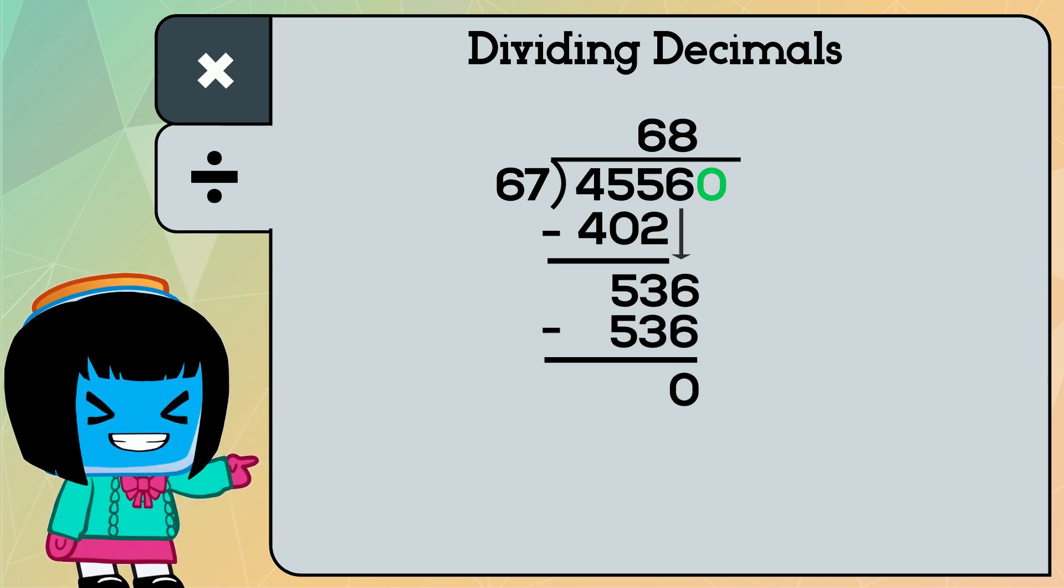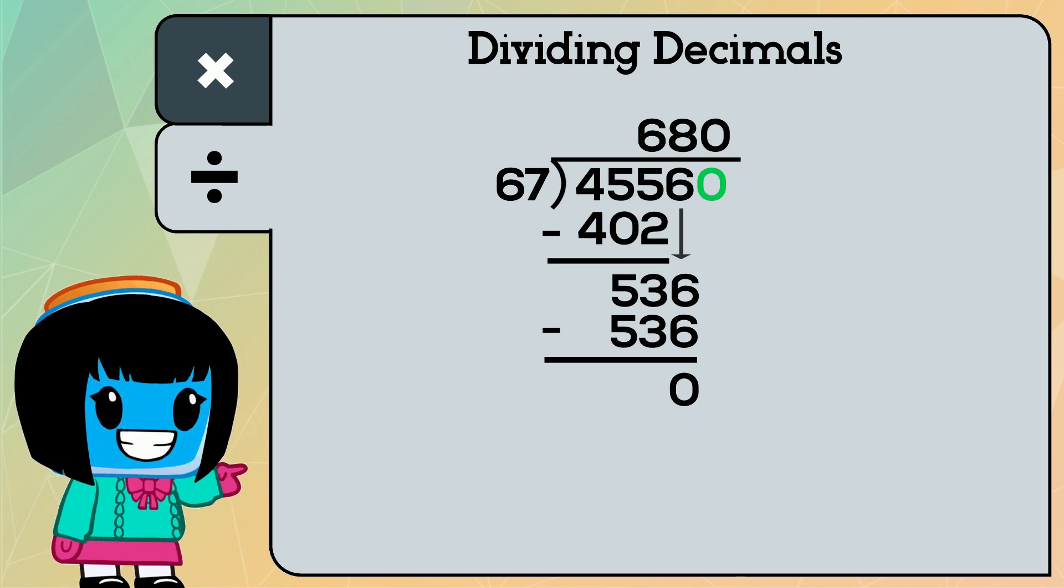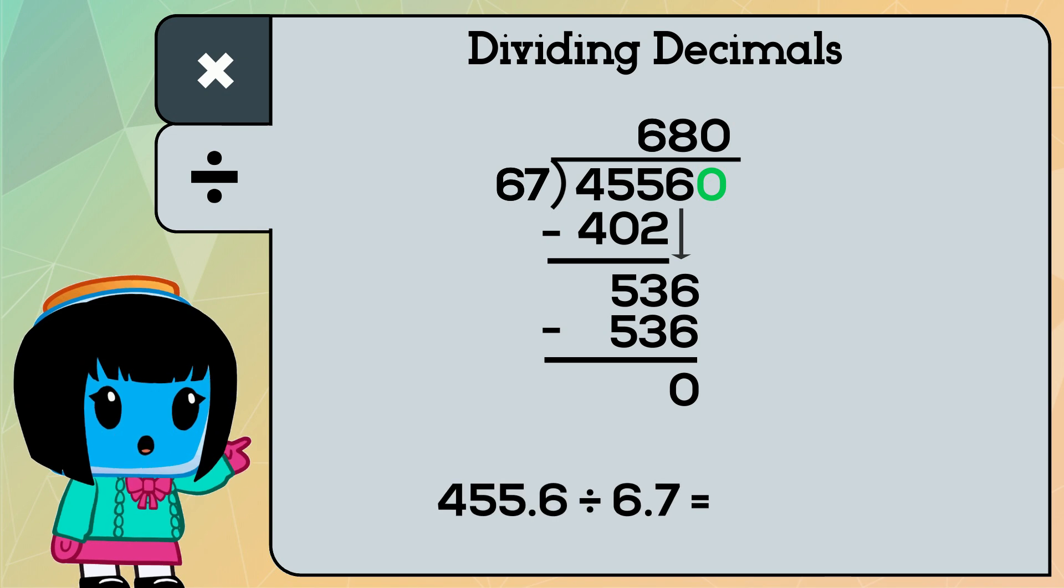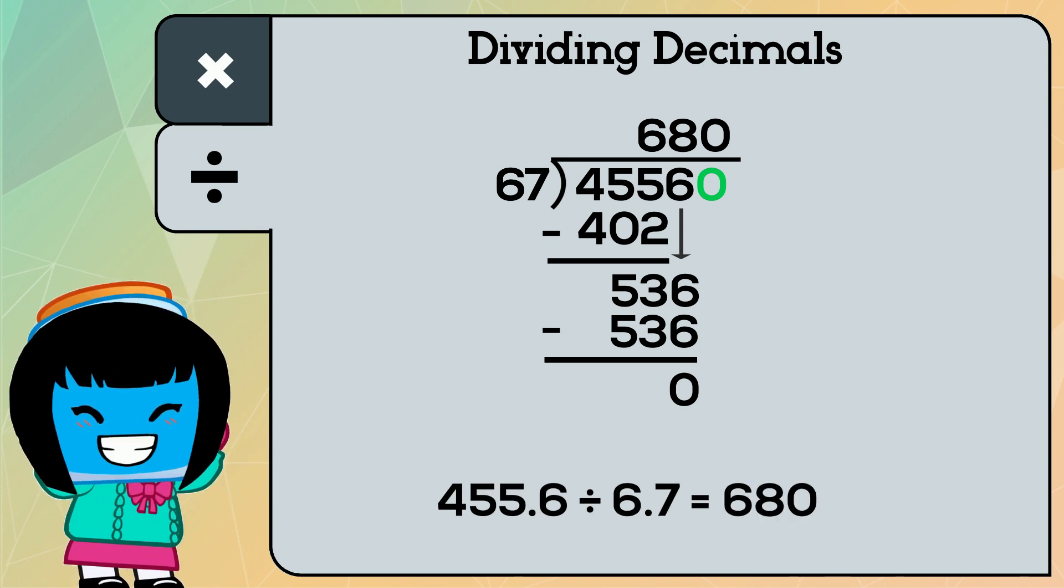Notice we still have a zero in the dividend, so we place zero as the last digit in the quotient. Our quotient for this problem is 680.